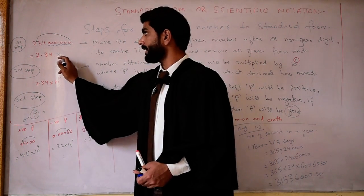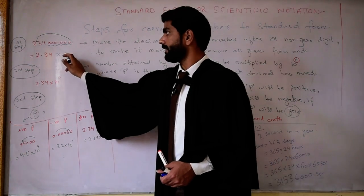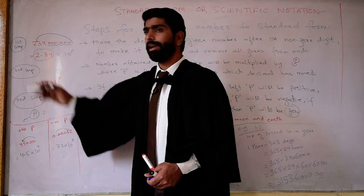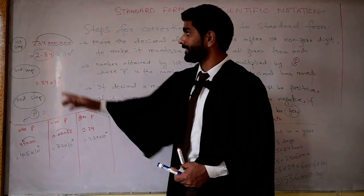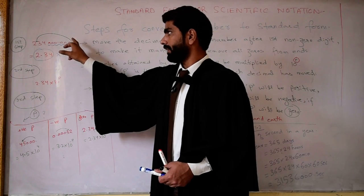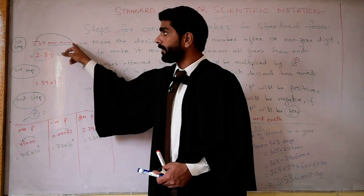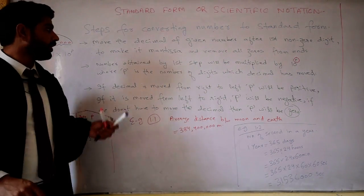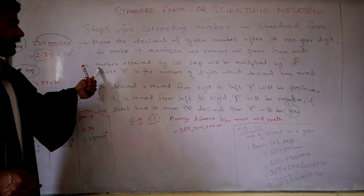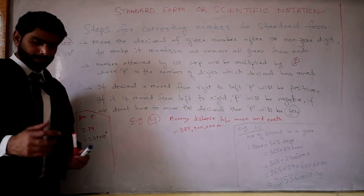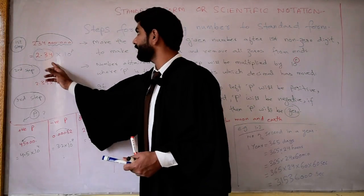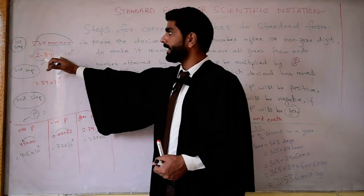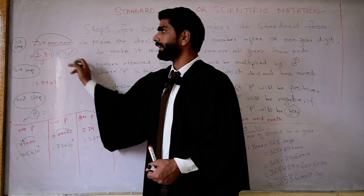Then in the next step we will multiply this number by 10 to the power p. This is called the mantissa of the number. So, the number obtained from the first step — the mantissa — is multiplied by 10 to the power p. This is the second step.